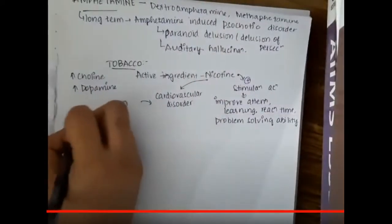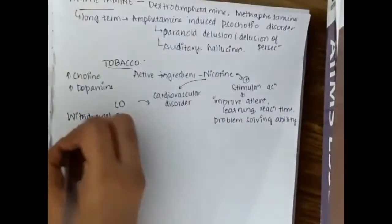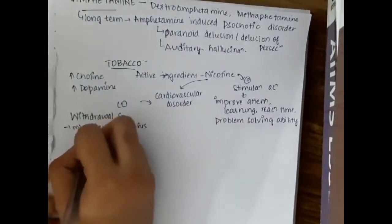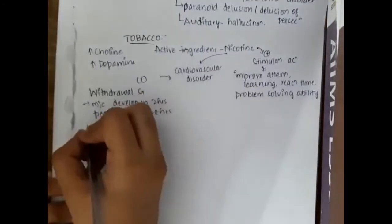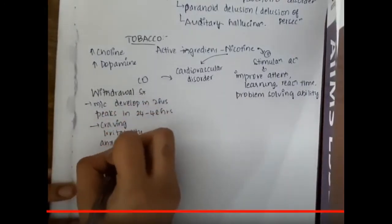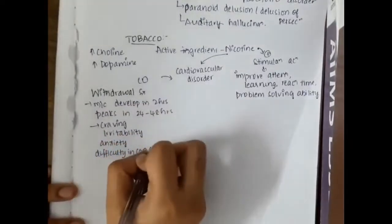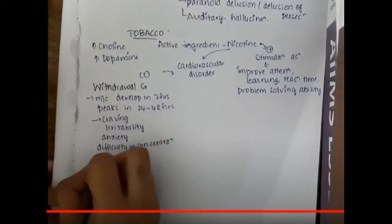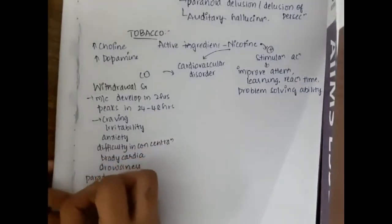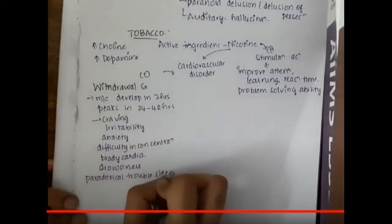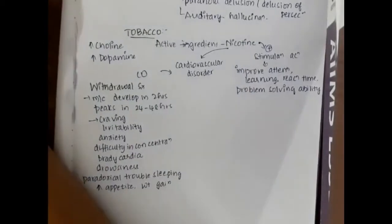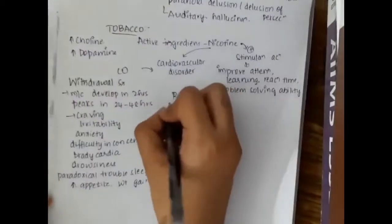There are withdrawal symptoms which can be seen due to tobacco intake. These withdrawal symptoms most commonly develop in two hours and peak in 24 to 48 hours. The patient develops craving, irritability, anxiety, difficulty in concentration. The patient also develops bradycardia, drowsiness and paradoxical trouble in sleeping. The patient has increased appetite and weight gain.